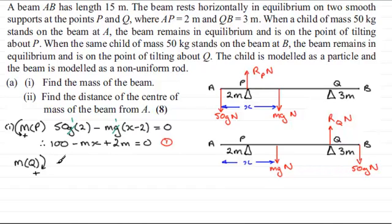So what equation are we going to get? Well, let's start then with the moment of the weight of the child. So it's going to be 50g again, 50g, multiplied by the distance back to Q, which is 3. So 50g then times 3. And now we've got to look at the moment of the weight of the beam about Q. So it's going to be mg multiplied by this distance here. So what is that distance? Well, if we've got 3 metres here, we know then that the beam is 15 metres.